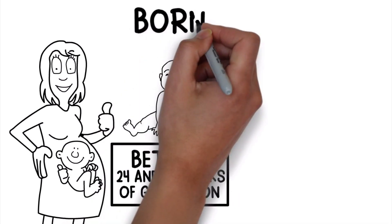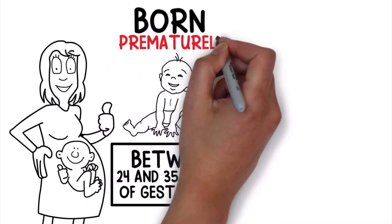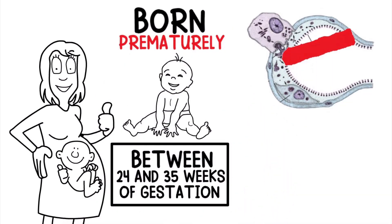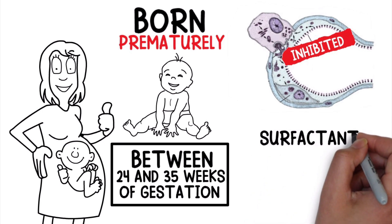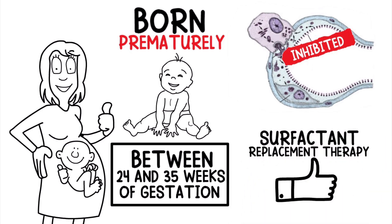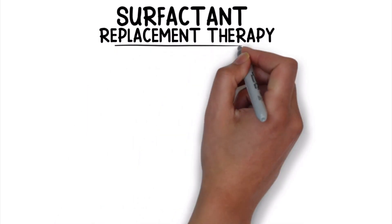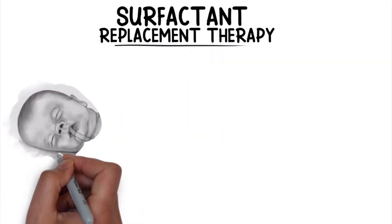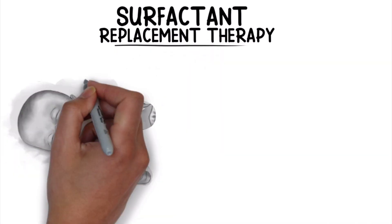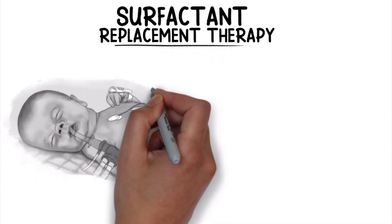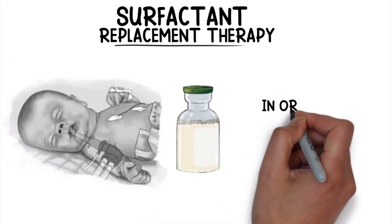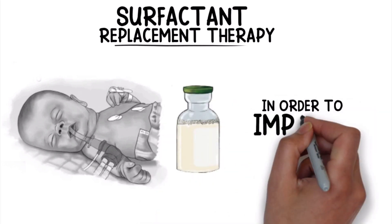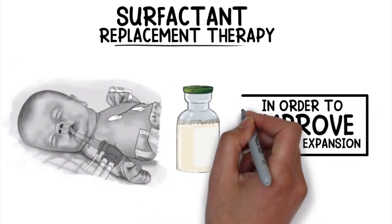So if an infant is born prematurely, the production of surfactant may have been inhibited, which is when surfactant replacement therapy would be indicated. Surfactant replacement therapy is a treatment modality that is often used in preterm infants with surfactant deficiency that involves the deliverance of exogenous surfactant in order to improve alveolar expansion.